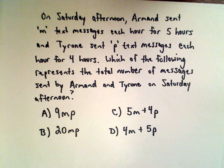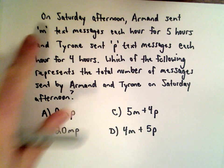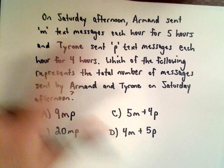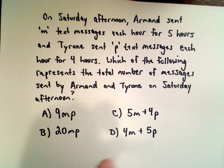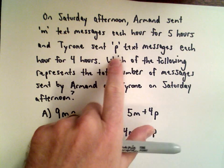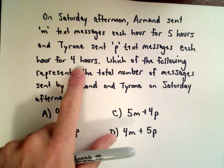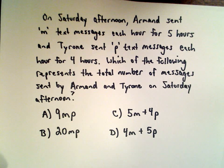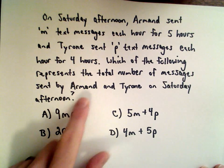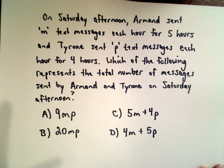So on a Saturday afternoon, Armand sent M text messages each hour for 5 hours, and Tyrone sent P text messages each hour for 4 hours. We want to know which of the following represents the total number of messages sent by Armand and Tyrone on Saturday afternoon.